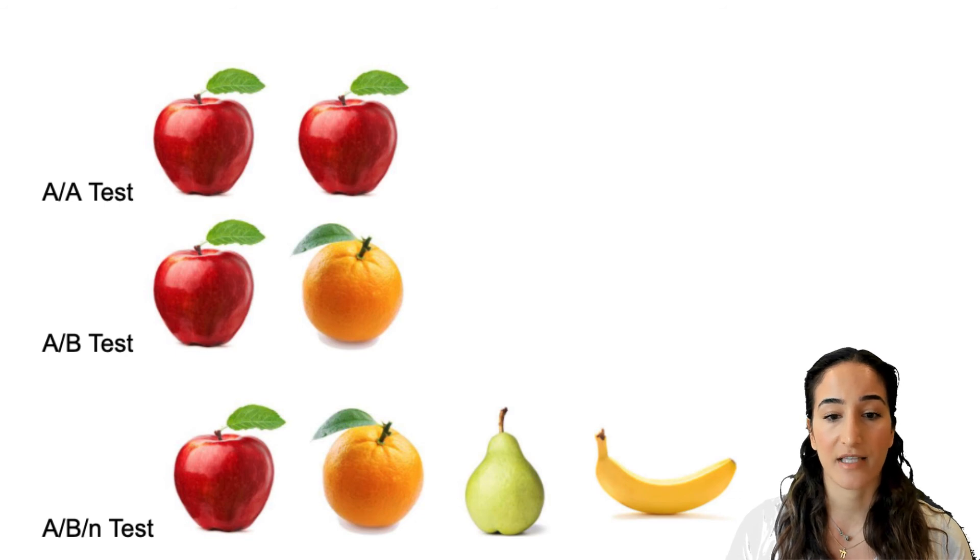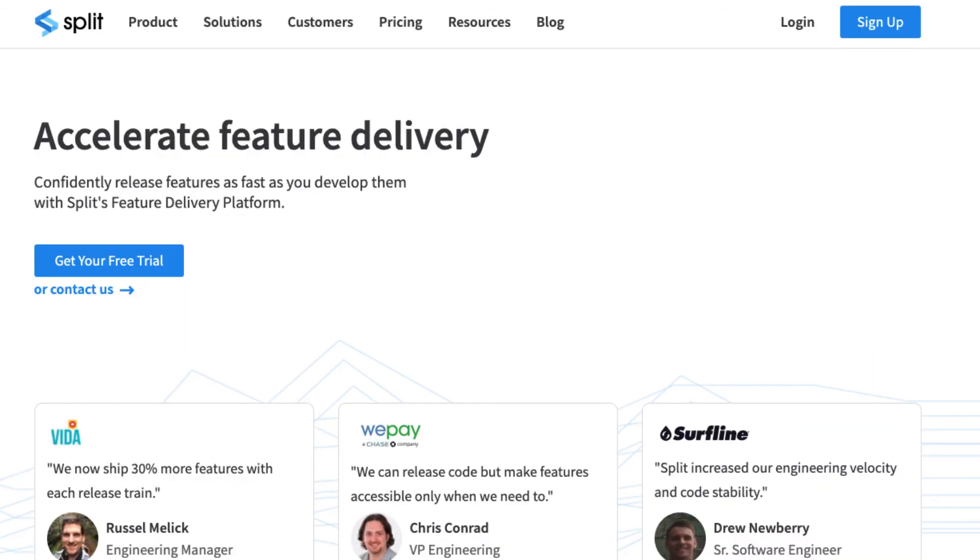Doing these different types of analyses gives you data that is essential to making business decisions. To start out with different experimentation types, head to Split.io and get your free trial. And if you have questions on setting this up, be sure to contact us. Our support team is here to help.